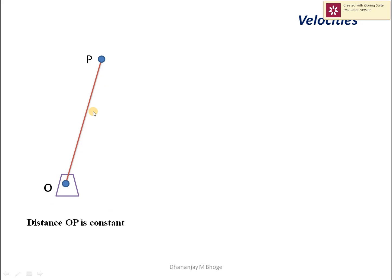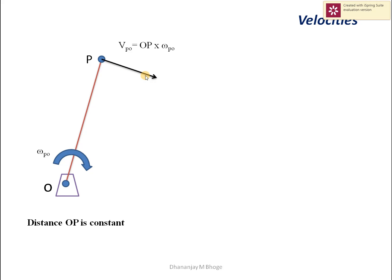Consider a link OP pivoted at point O. The distance of P from O is fixed and constant since P is not moving relative to O along the length of the link. When the link rotates about pivot point O with some angular velocity omega, point P will also rotate about O in a circular path and will have a linear tangential velocity equal to the radius of rotation OP times its angular velocity. The direction of this linear tangential velocity is perpendicular to the radius of rotation OP.